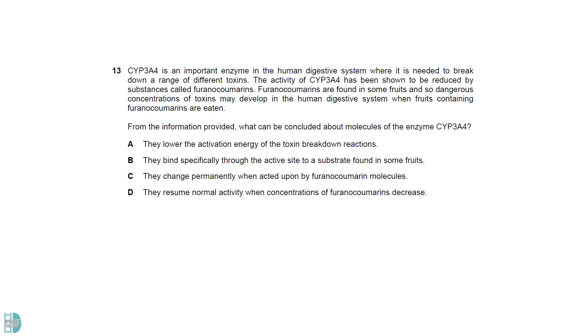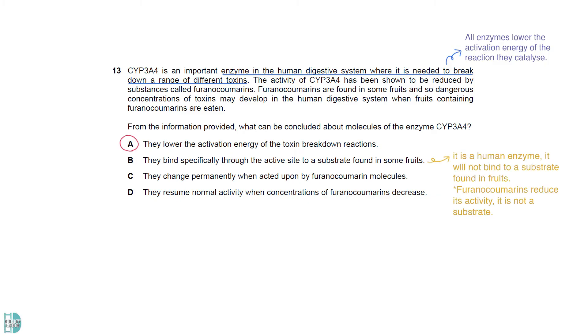CYP3A4 is an enzyme for the toxin breakdown reaction. So, it reduces the activation energy to speed up the reaction. This makes A the correct answer. B is wrong as it is an enzyme in the human digestive system. It will not bind to a substrate found in fruits. Furanocoumarin is an inhibitor of the enzyme. The question did not tell us what kind of inhibitor it is. So, there is no information to support statements C or D.